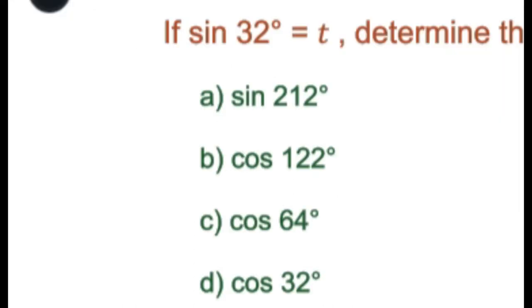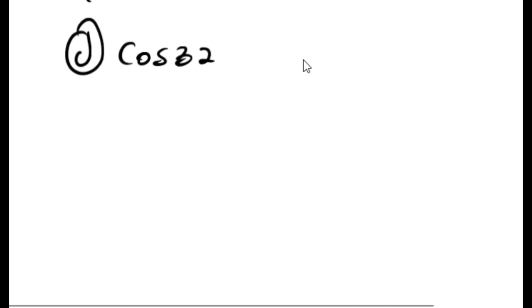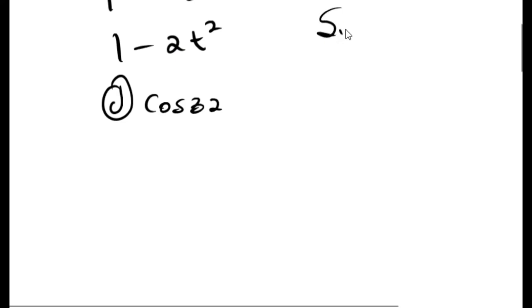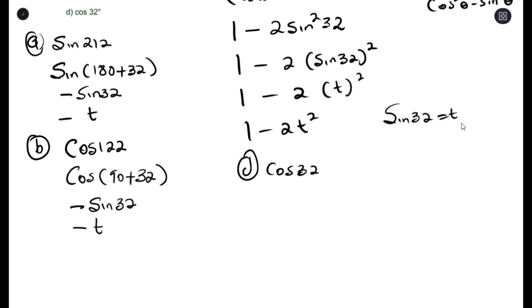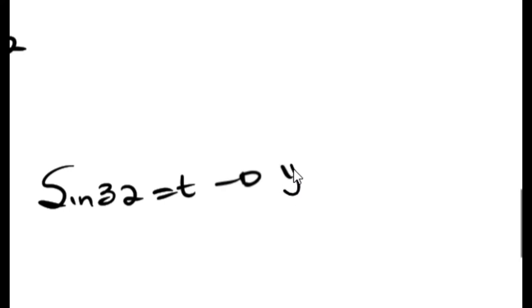The last question asks us to find cos 32°. We're given that sin 32° = t. There's no way to convert cos 32° into sin 32°, so we need to use trig ratios. We understand that sine is y over r. Since sin 32° = t, we can rewrite this as t/1 because